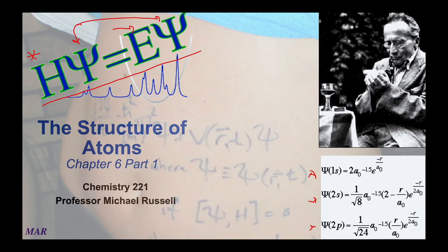One of the main players who developed H psi equals E psi is Schrödinger, whose picture is in the upper right-hand corner. Schrödinger is a fascinating person both from a scientific and personal perspective — his philosophy is quite interesting. I encourage you as a side project to check him out in more detail. This area we're going to get into, collectively known as quantum mechanics or quantum chemistry, affects people in very strange ways.